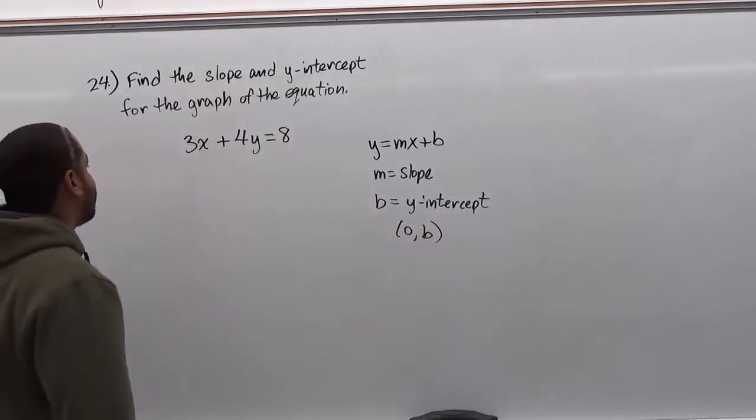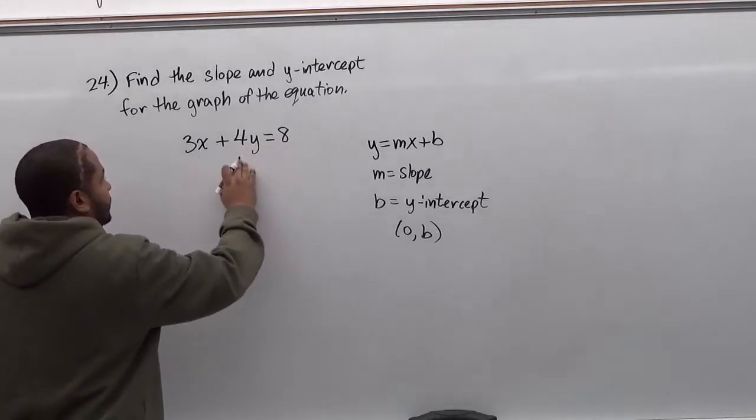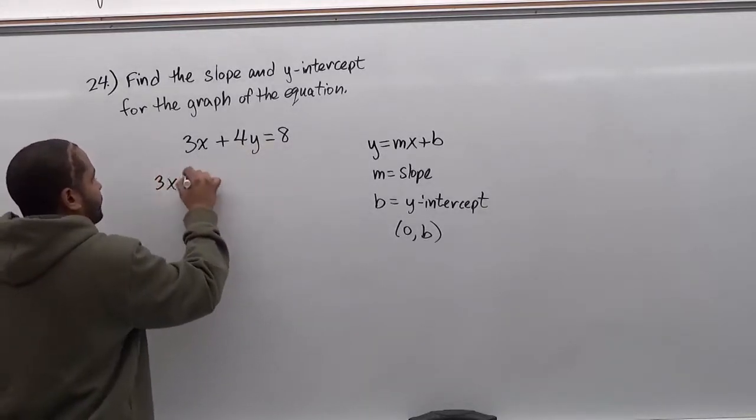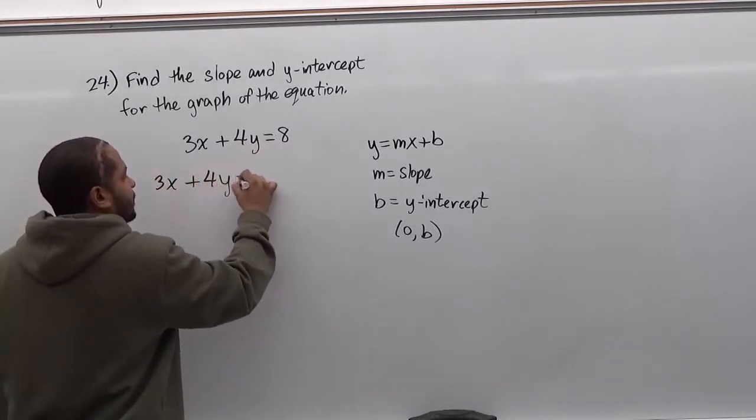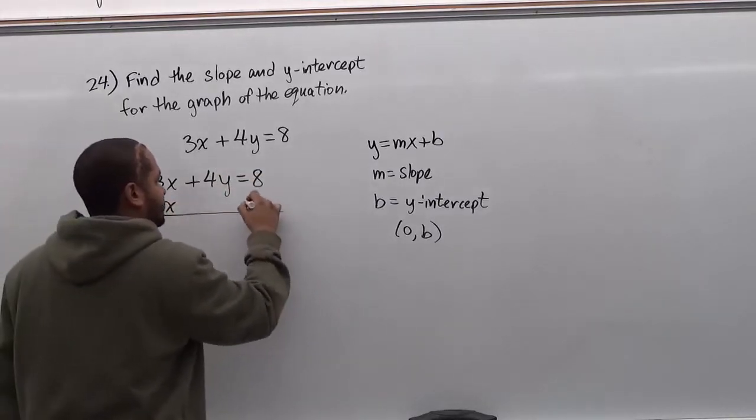So let's go ahead and isolate our y. The first thing we're going to do is move over the 3x so that we can have the y alone. So we have 3x plus 4y equals 8, and we're using the additive inverse for 3x. So we're using negative 3x to both sides.